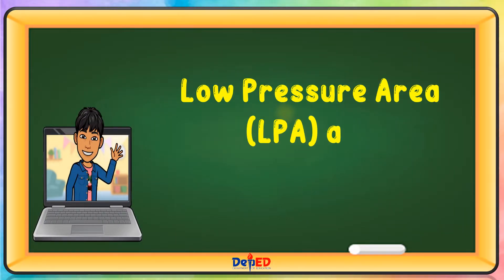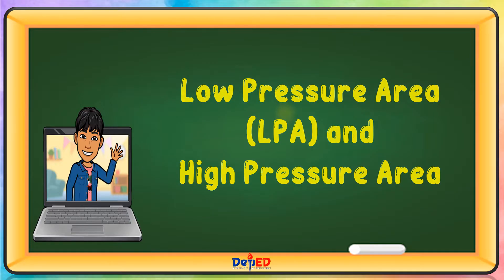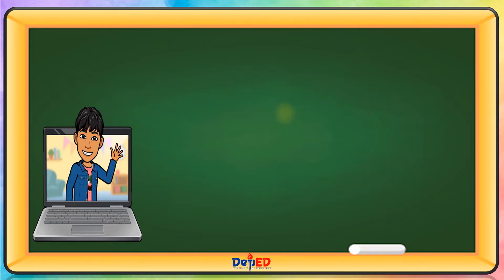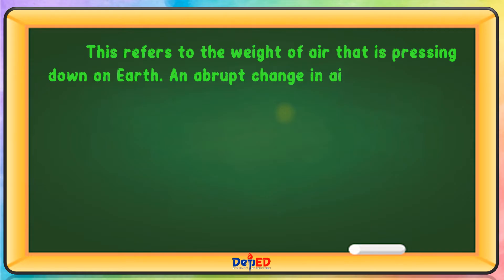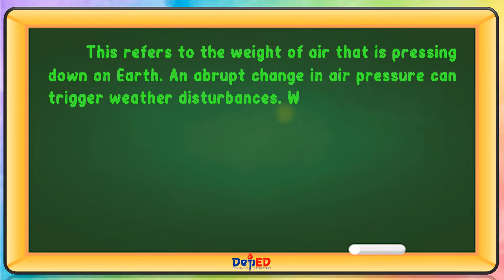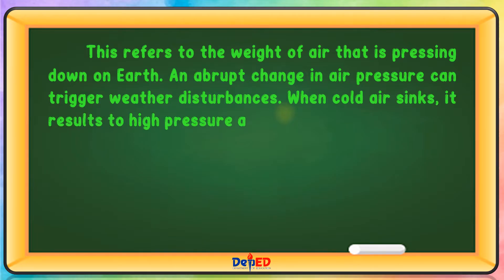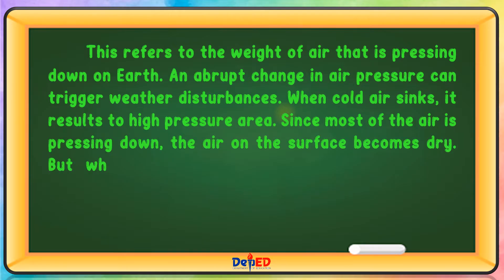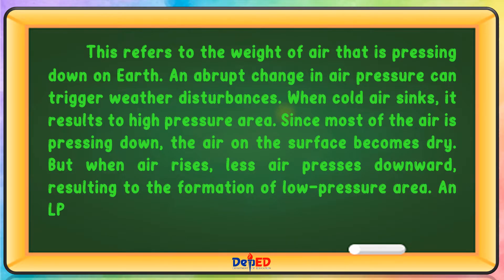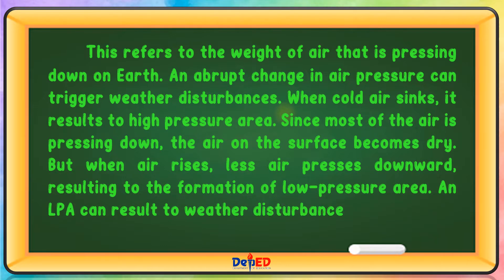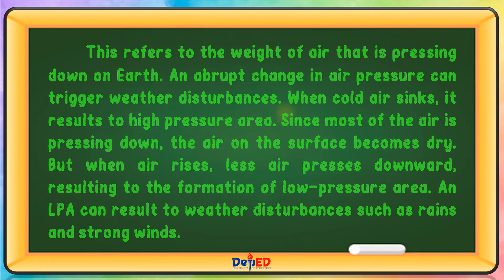Low Pressure Area or LPA and High Pressure Area refers to the weight of air that is pressing down on Earth. An abrupt change in air pressure can trigger weather disturbances. When cold air sinks, it results in a high pressure area. Since most of the air is pressing down, the air on the surface becomes dry. But when air rises, less air presses downward, resulting in the formation of a low pressure area. An LPA can result in weather disturbances such as rains and strong winds.